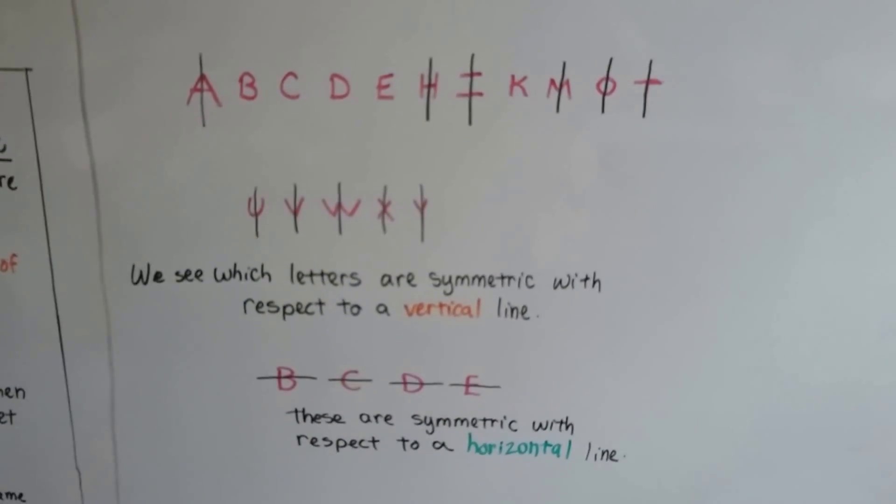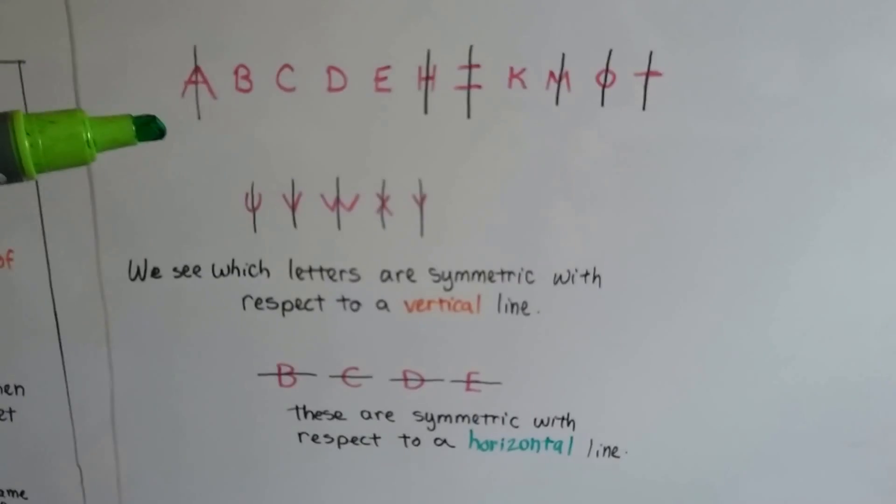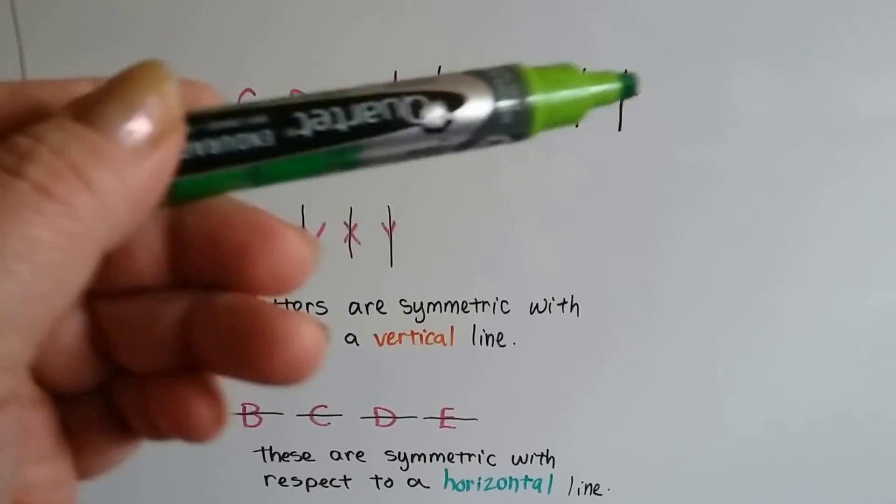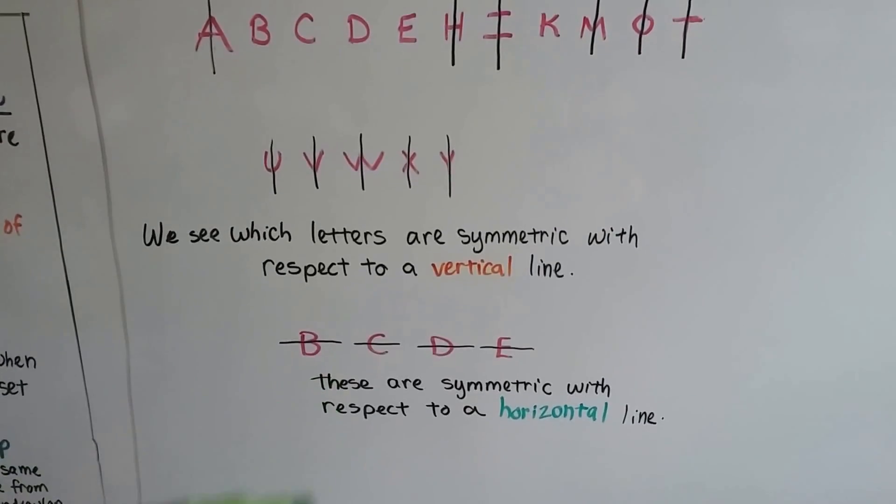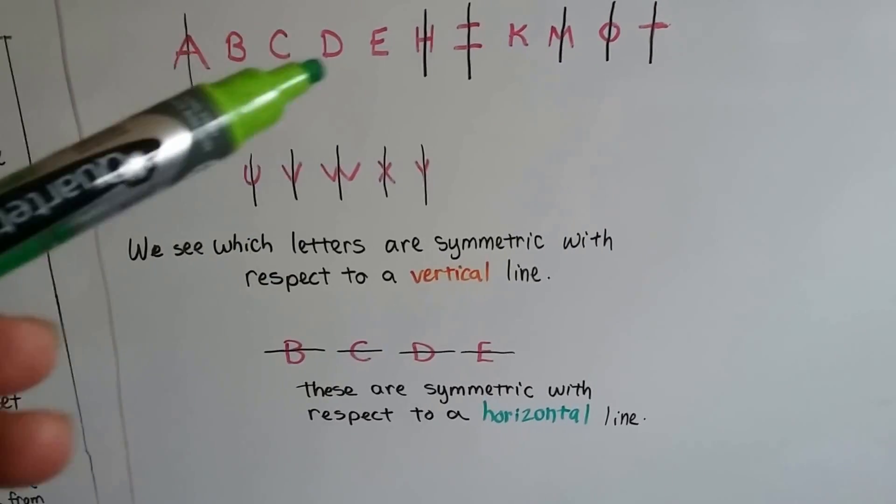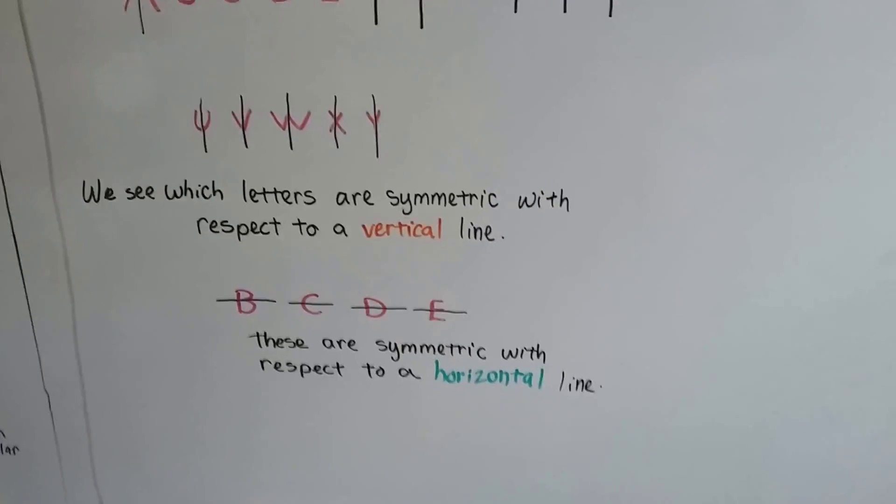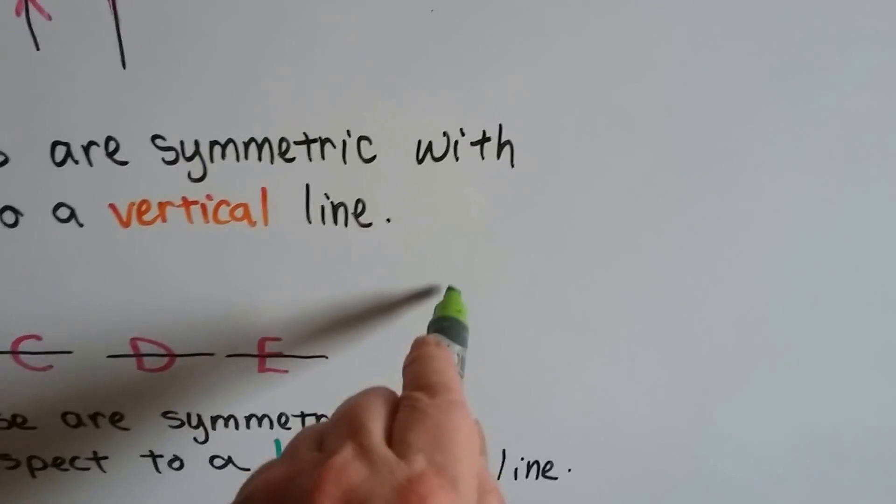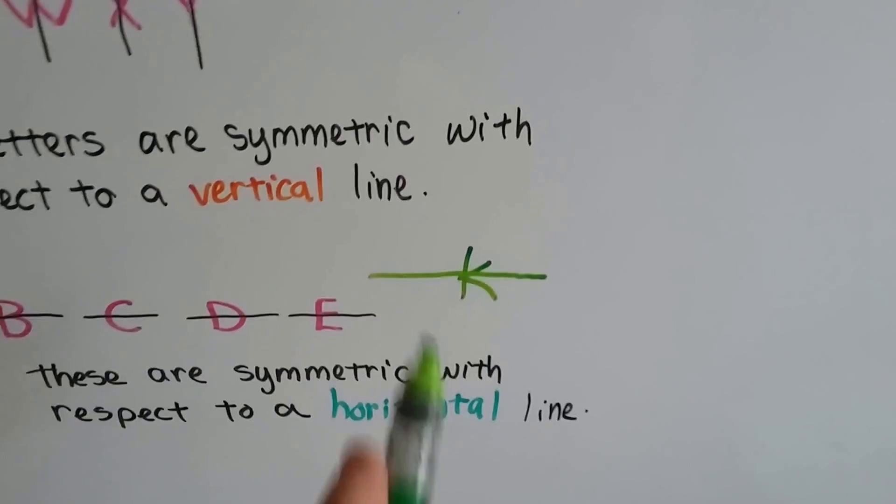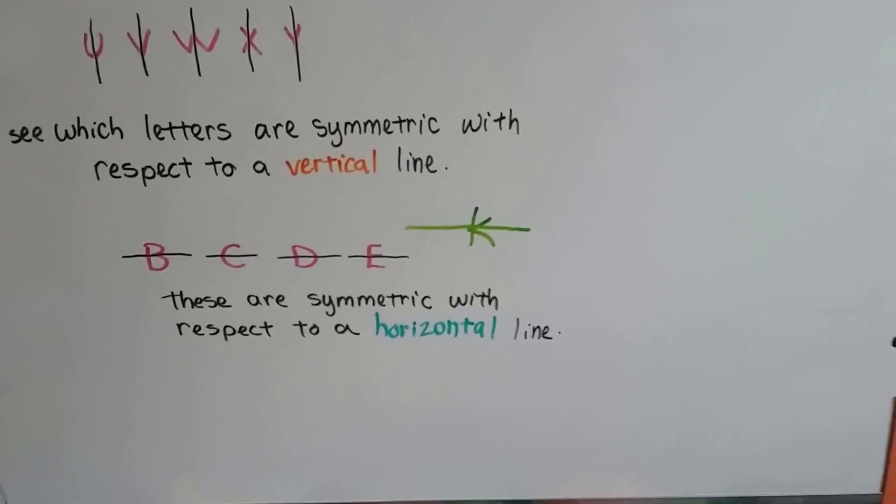If we look at the letters of the alphabet, we can see which letters are symmetric with respect to a vertical line. And these are symmetric with respect to a horizontal line, aren't they? The b, c, d, e, even the k. Depending on how we write the k. If we write the k perfectly, we could say that it's symmetric to a horizontal line, couldn't we?